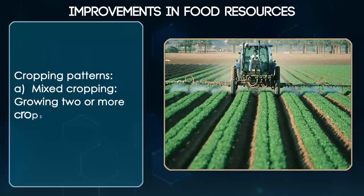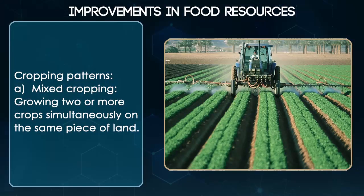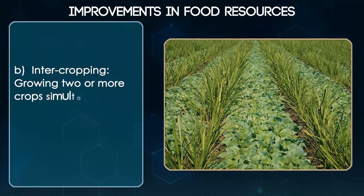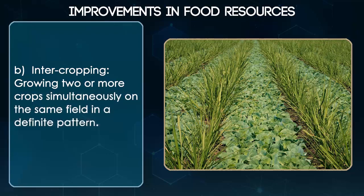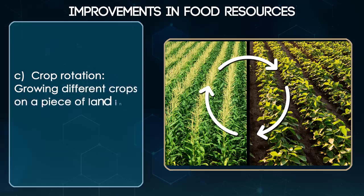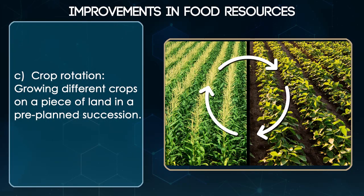Cropping Patterns: A. Mixed Cropping — growing 2 or more crops simultaneously on the same piece of land. B. Inter-Cropping — growing 2 or more crops simultaneously on the same field in a definite pattern. C. Crop Rotation — growing different crops on a piece of land in a pre-planned succession.